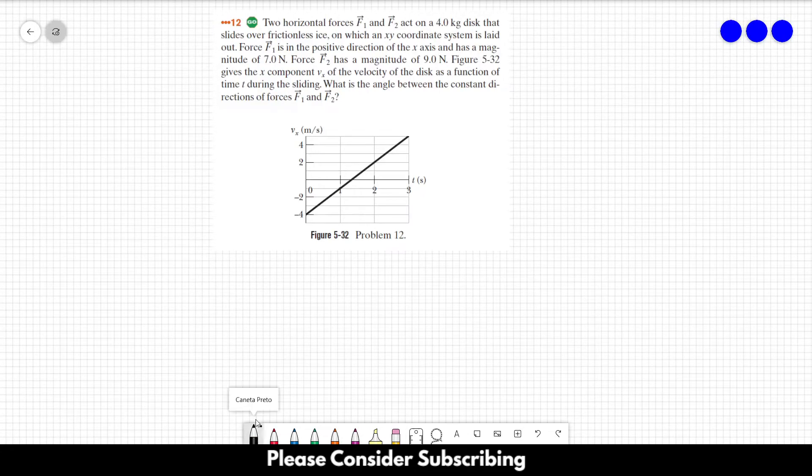Number 12. Two horizontal forces F1 and F2 act on a 4 kg disc that slides over frictionless ice, on which an x-y coordinate system is laid out.